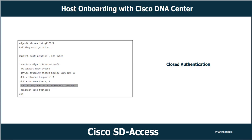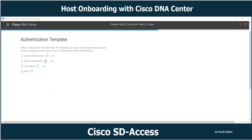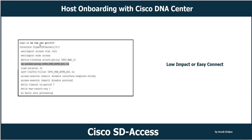The last authentication template is low impact, also known as Easy Connect. Easy Connect applies an ACL to a port in open authentication mode. The ACL acts as an additional security mechanism to make sure only certain traffic is allowed if the client fails authentication. The source template in use is 'DefaultWired_dot1x_lowImpact', and an inbound ACL is applied to the interface.